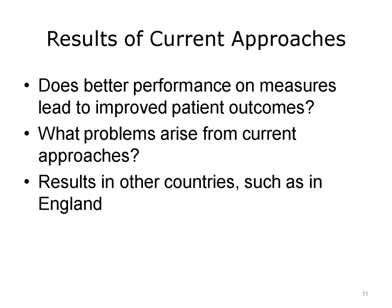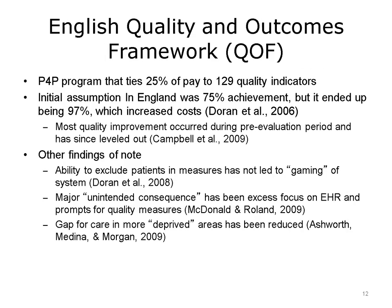Next is a discussion of the results of current approaches to quality measurement and a review of research that has attempted to determine whether better performance on quality measures, particularly process measures, leads to improved patient outcomes. There's evidence both for and against these approaches and other problems might arise from the current strategies to measure quality. The U.S. health care system is moving away from the traditional fee-for-service model — payment regardless of patient outcomes or quality — and toward a pay-for-performance or P4P model that links provider payment to the patient's outcome of care.